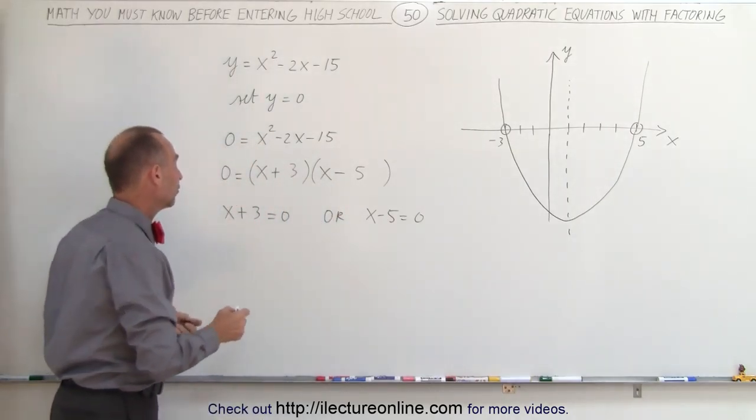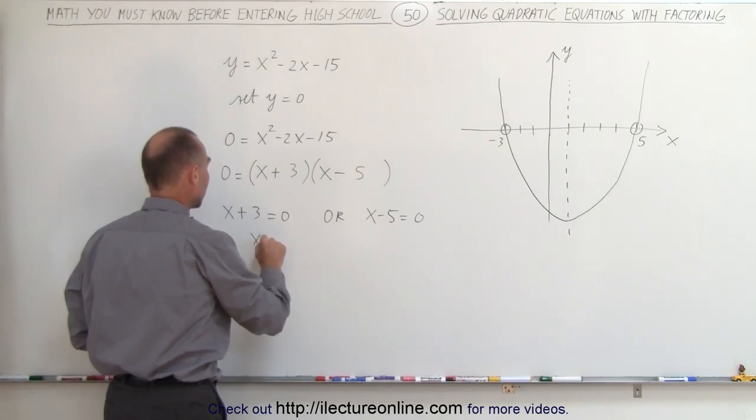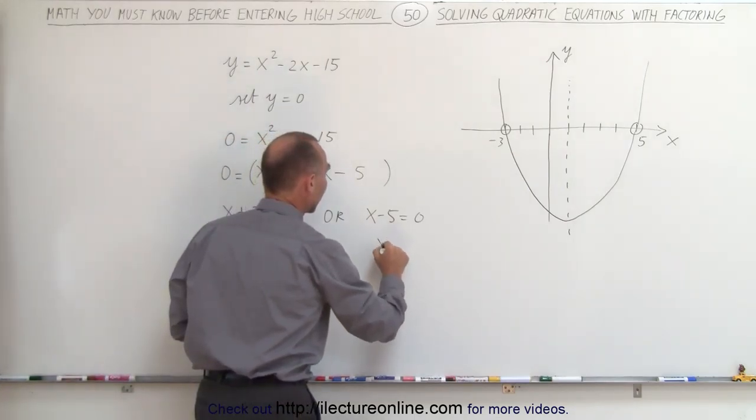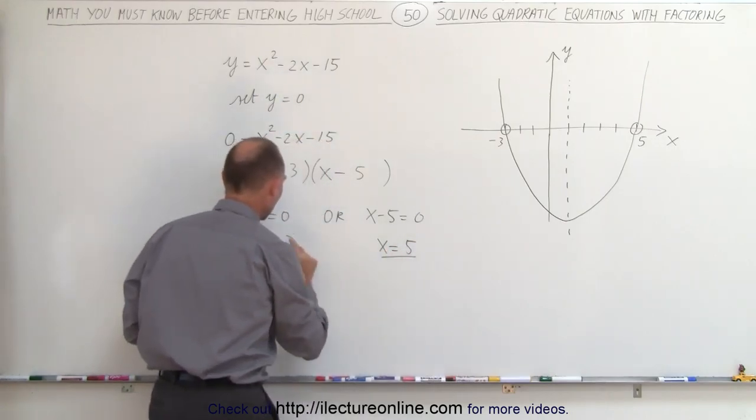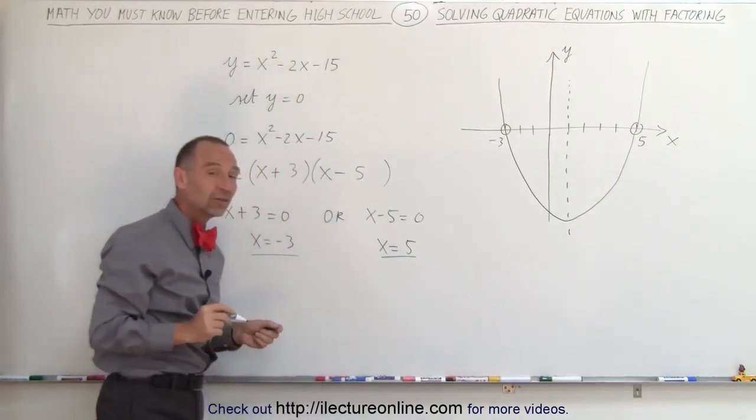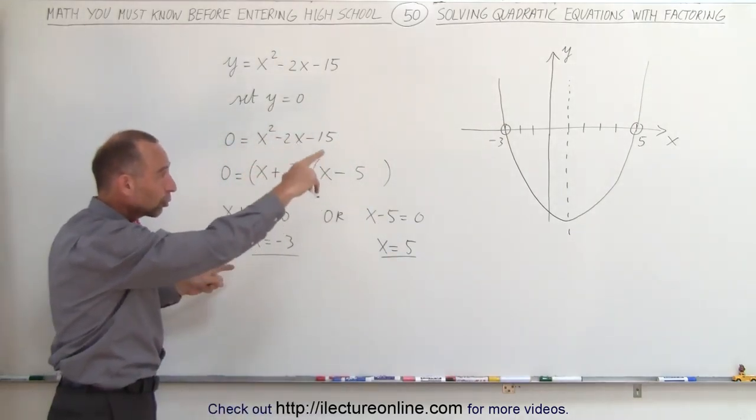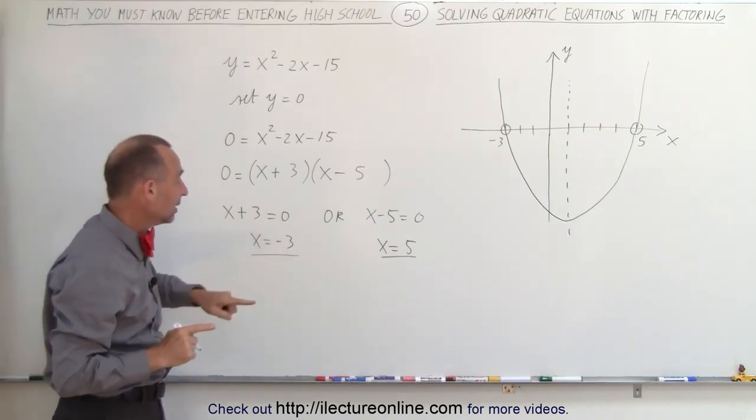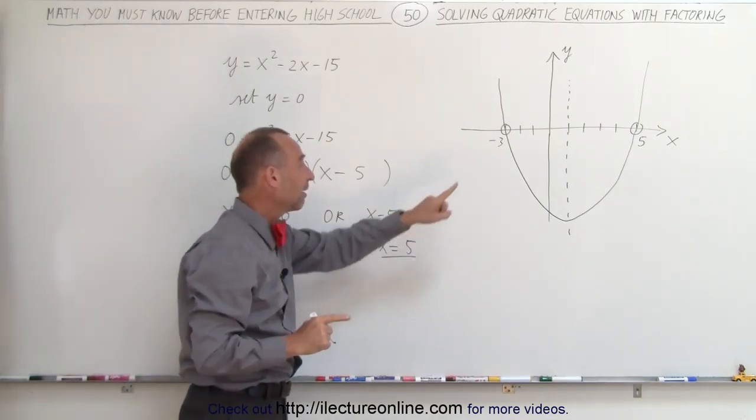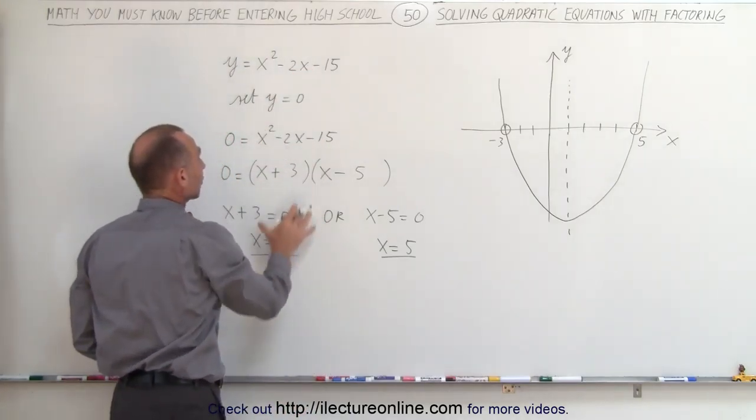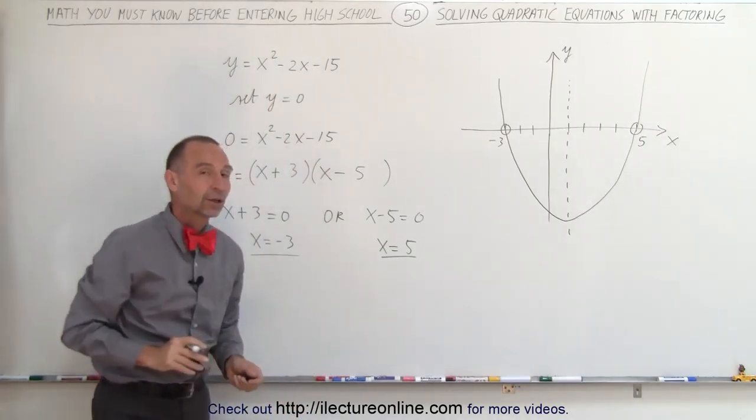Well, if the first case is true, we get x = -3. If the second case is true, we get x = 5, and those happen to be the two solutions to the quadratic equation, which means the graph representing the equation crosses the x-axis at -3 and crosses the x-axis at 5, just like what we've drawn over there. And that's how we use factoring to solve quadratic equations.